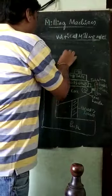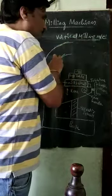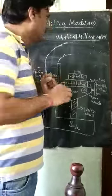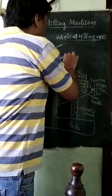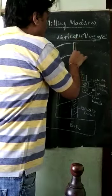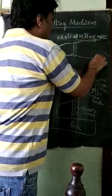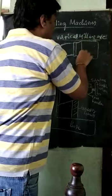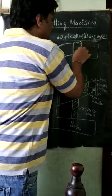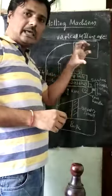Next, I will draw a curved shape frame here. Then we have to fix a spindle here — this is the spindle. The spindle is graduated, with markings on it.